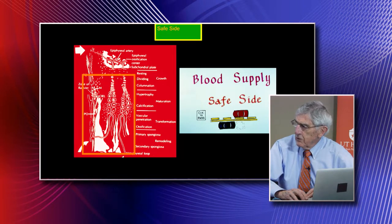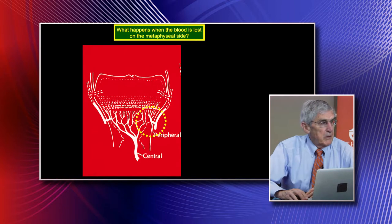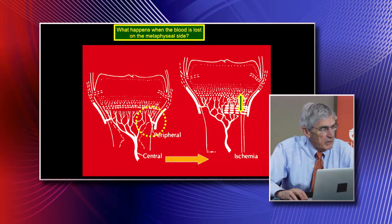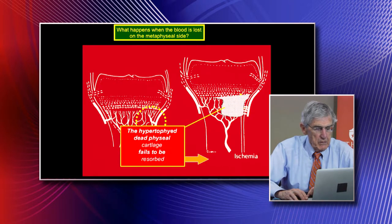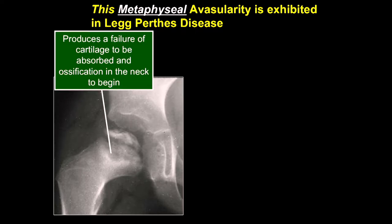What happens on the metaphyseal side if you lose the blood supply? That's the safe side—you can operate there. But if you lose the blood supply on the metaphyseal, reabsorption side, it's actually a lack of reabsorption of that dead cartilage. You don't have the blood vessels to absorb that calcified dead cartilage, so you get a large mass of cartilage that's not absorbed—as seen in Legg-Perthes disease.